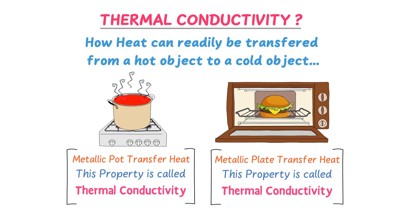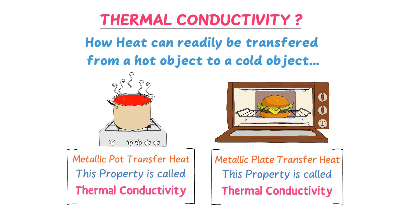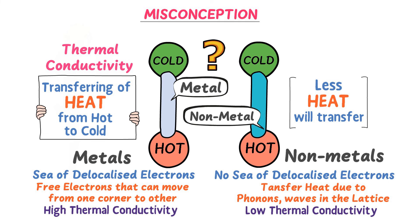To summarize: thermal conductivity measures how heat can readily be transferred from a hot object to a cold object. For example, during cooking the metallic pot conducts heat. Secondly, metallic objects conduct more heat than non-metallic objects — for example, the body of a kettle is made up of metal and the handle is made up of plastic.